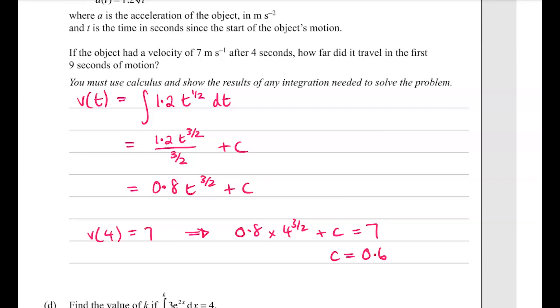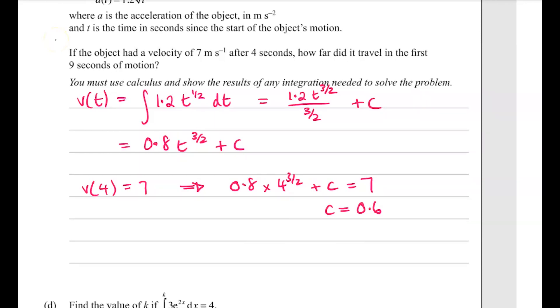We get that c is 0.6. We seem to have run out of room a little bit, but the next thing, then we want how far it went, so we want the distance traveled. So the distance we can do by integrating the velocity.